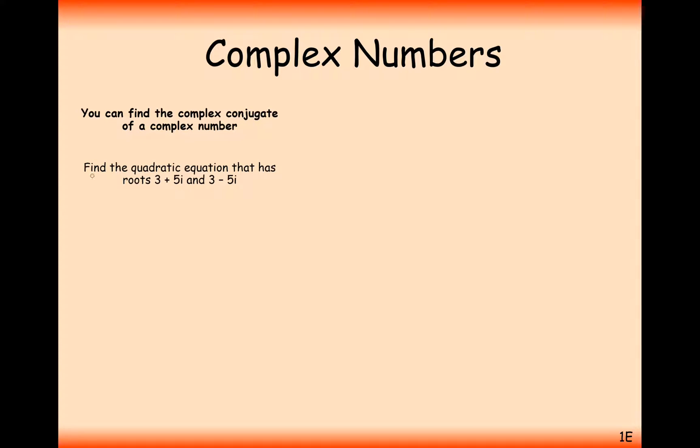Now, in this question here, we're asked to find the quadratic equation that has the roots of 3 plus 5i and 3 minus 5i. You can notice these two roots here are complex conjugates of each other. And when the roots are complex conjugates of each other, we're going to get a quadratic equation that doesn't have any i's in it at all. It's all real coefficients, and you'll see why that is in a bit.